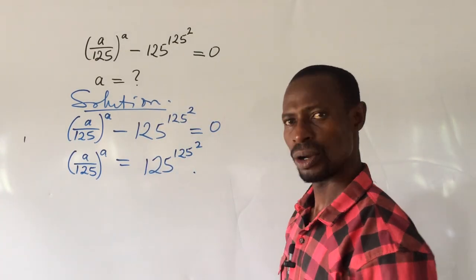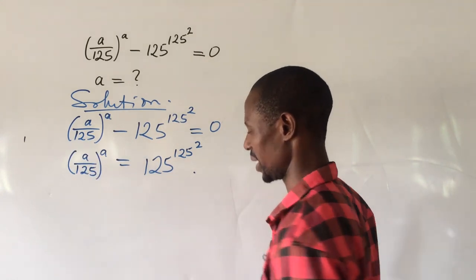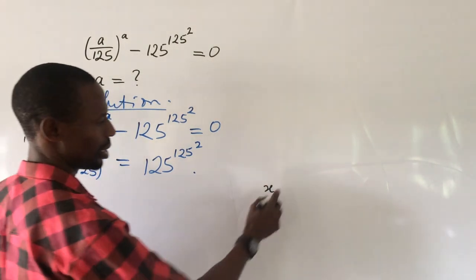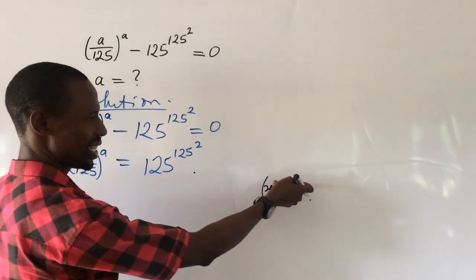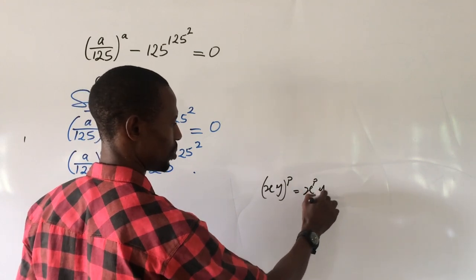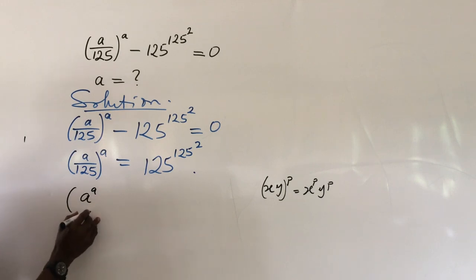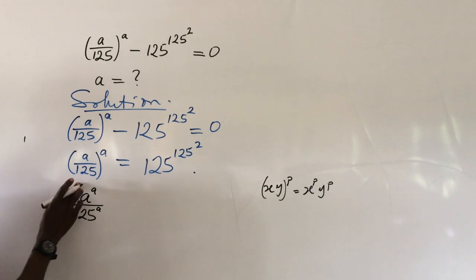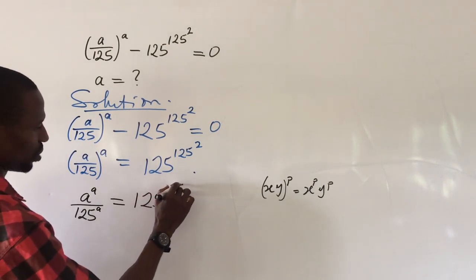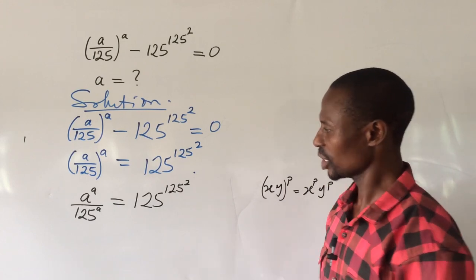Now at this point, we use this exponent a to open everything in the bracket. According to the law of indices, if you have x/y all to the power of p, we distribute this p among the terms in the bracket, so this becomes x to the power of p over y to the power of p. Applying that here, this will automatically become: a to the power of a, all over 125 to the power of a, equal to 125 to the power of 125, all to the power of 2.